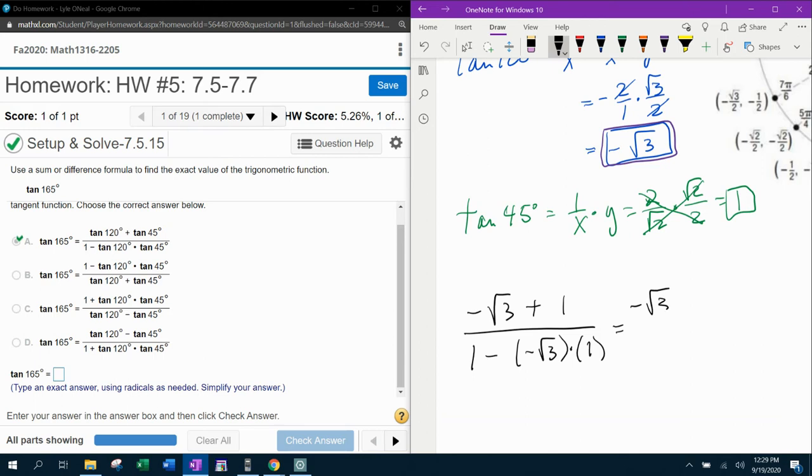In the denominator, I'm going to have one minus negative square root of three times one. And then I just need to evaluate this. So that's going to be negative square root of three plus one over, if I do the multiplication first, that's going to be negative square root of three. But then a negative times a negative makes that a positive.